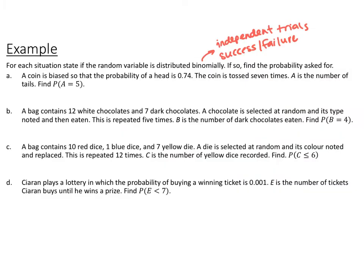For the next example, we look at four situations to decide whether the random variable is binomially distributed, and if so, find the requested probability. Binomial distributions require independent trials and only two outcomes: success or failure. The first situation: a coin is biased so the probability of heads is 0.74, and the coin is tossed seven times. A is the number of tails — find P(A = 5). Flipping a coin involves independent trials, and there are only two outcomes, so this is binomial.